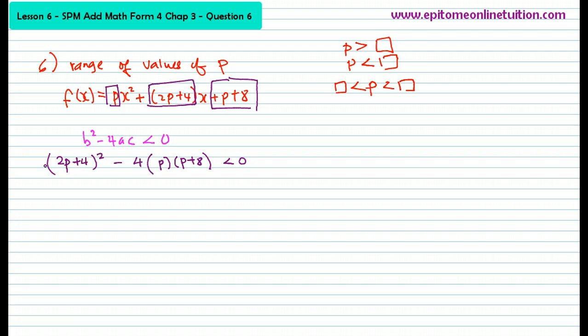So now solve all these things. You will be able to find p is between something to something or bigger than something. Okay, now expand this carefully. 4p square plus 16p plus 16, that's minus. So negative 4p times p is negative 4p square. This is negative 4p here, negative 4p times 8, that's negative 32p, less than 0.